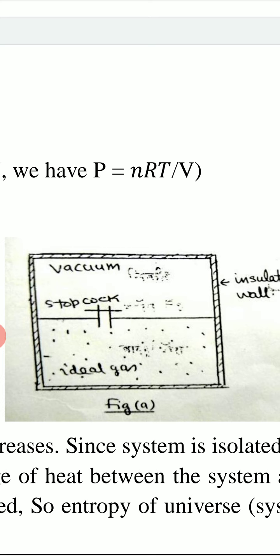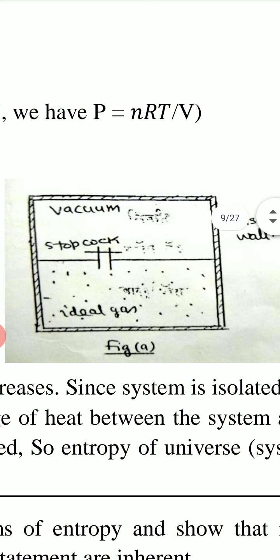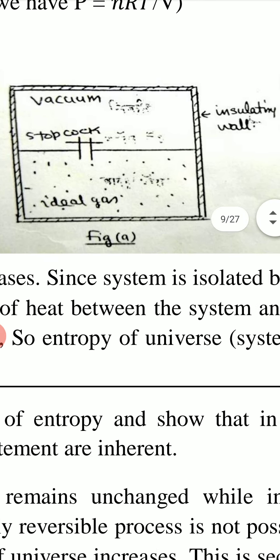We want to find the change in entropy for this process in which the volume of ideal gas changes from Vi to Vf. Vi is the initial volume when the gas is in one vessel, and Vf is the final volume when the stopcock is opened and the gas expands into both vessels.